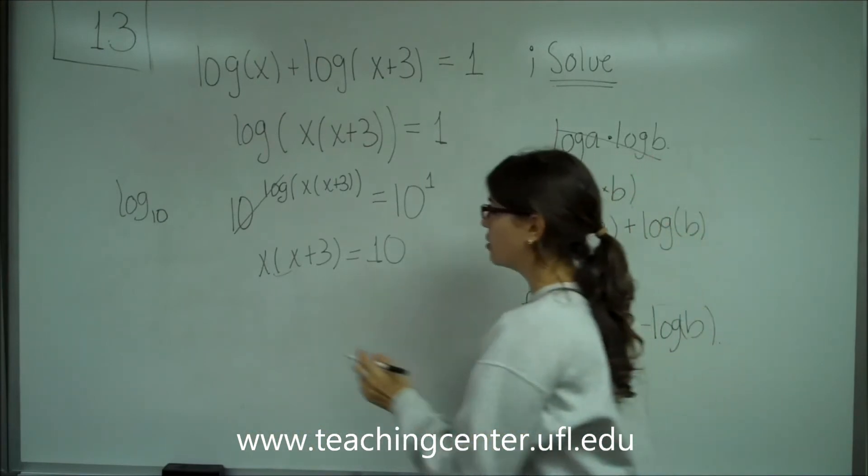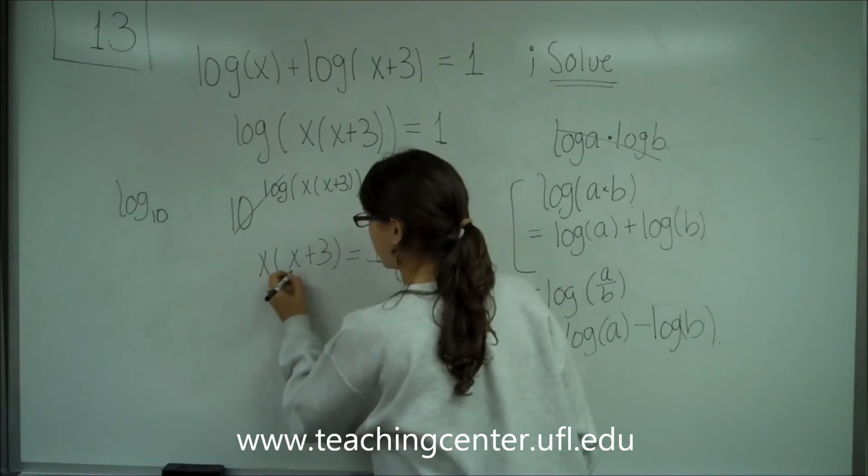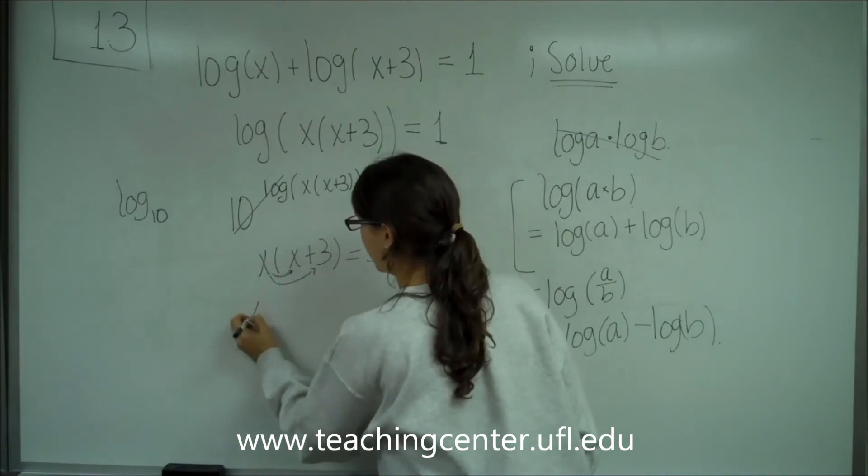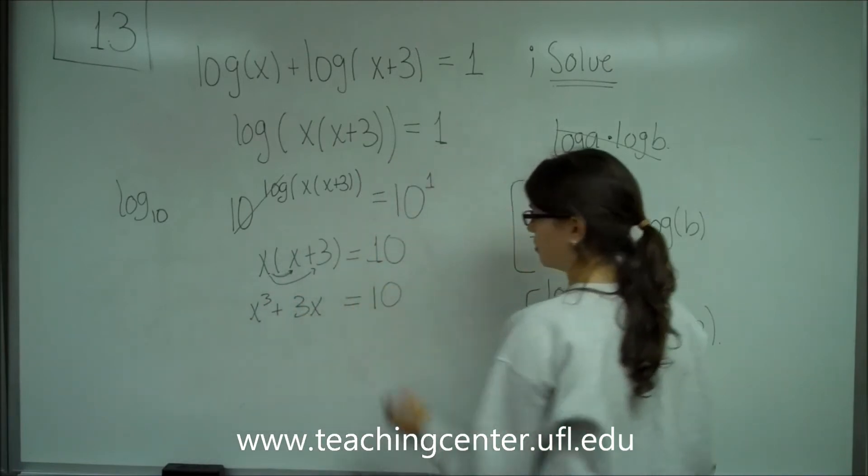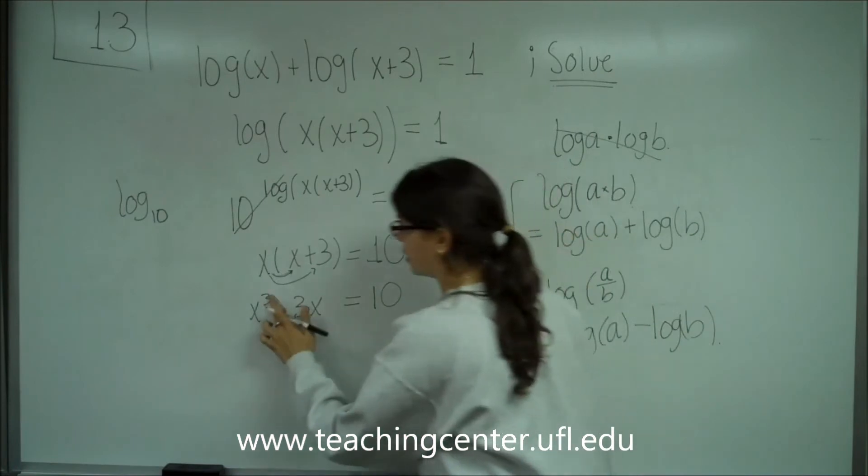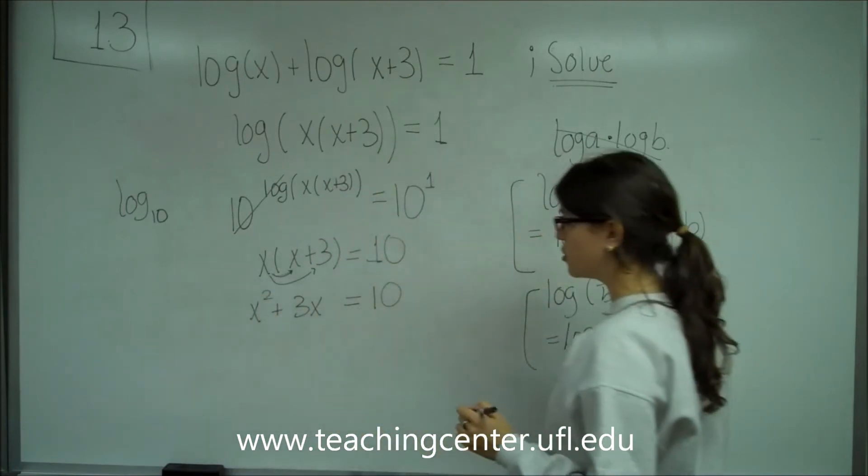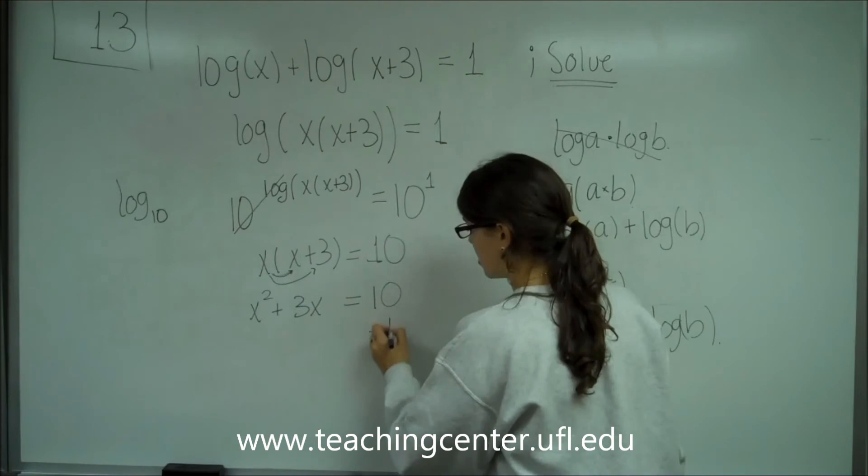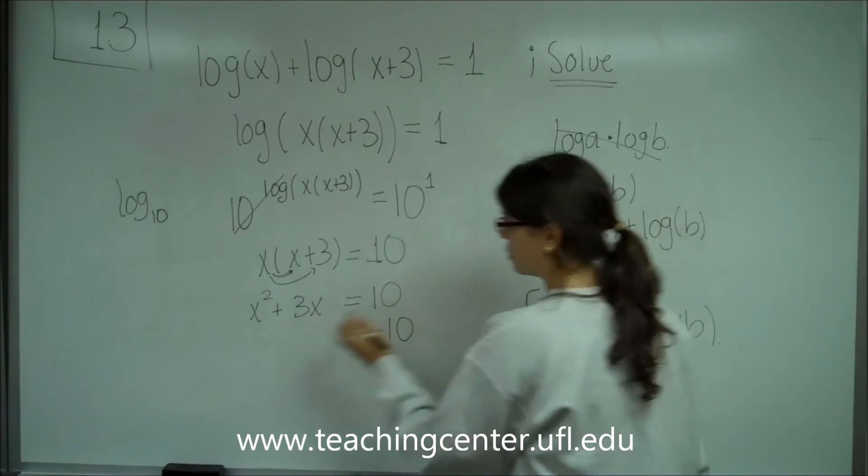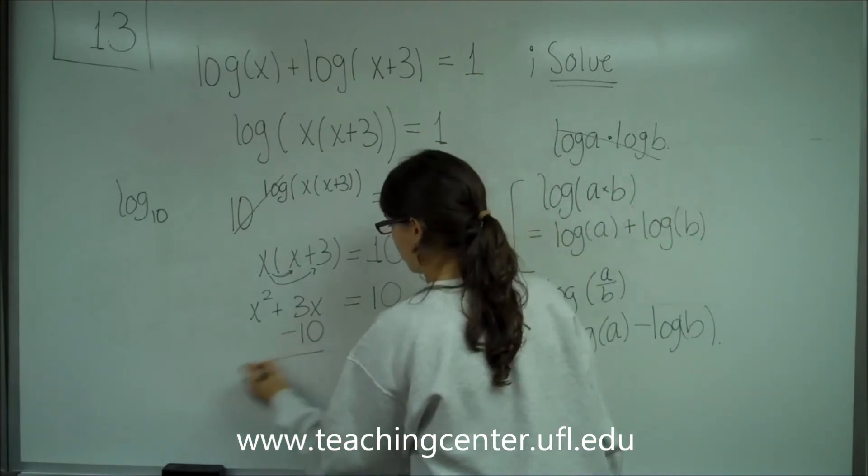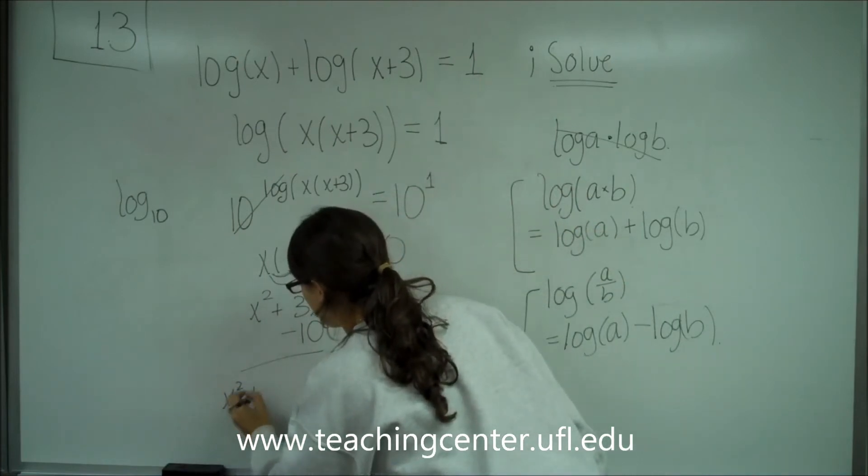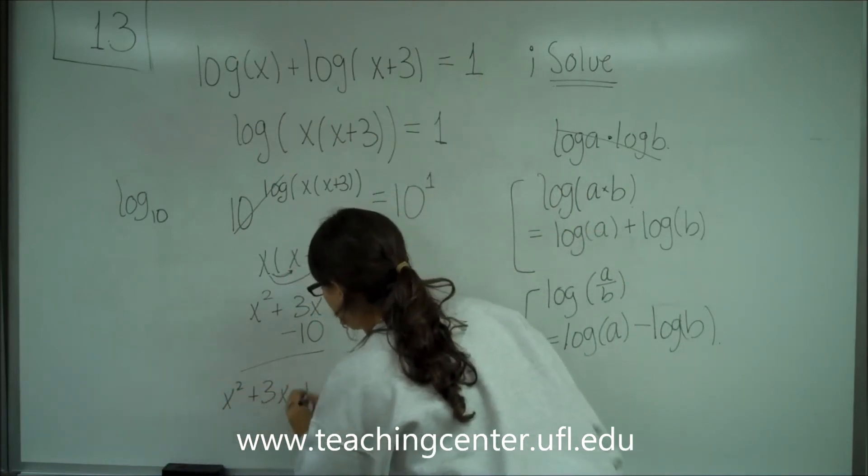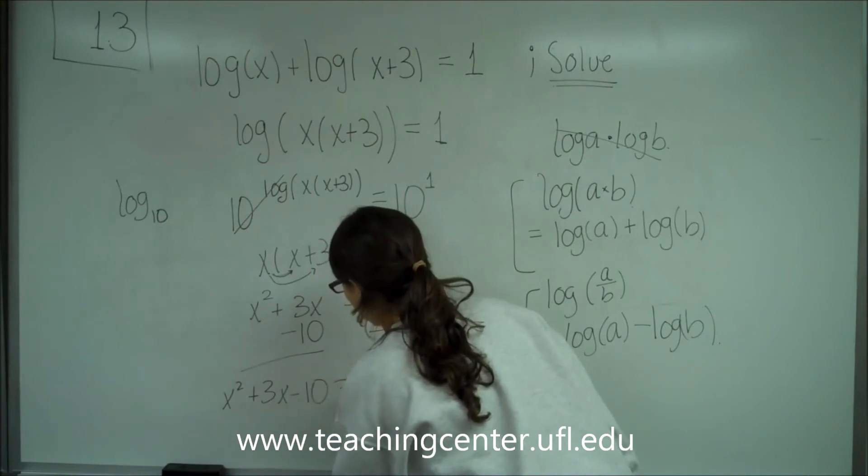So that's what we're going to try to do here. So first, let's multiply this out. And we get x² + 3x. And then on this side, 10. So let's subtract both sides by 10 so that this could be equal to zero. And we get x² + 3x - 10 = 0.